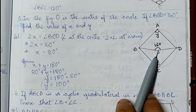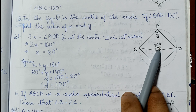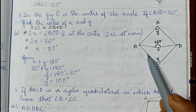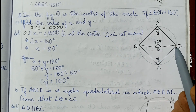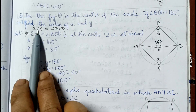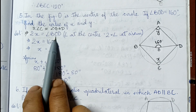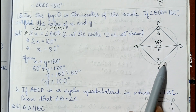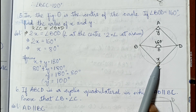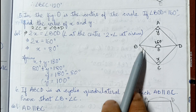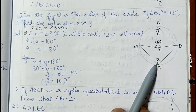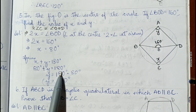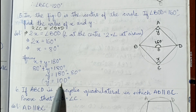Question number five: O is the center of the circle and angle BOD is 160 degrees; find X and Y. The angle at the center is twice the angle at the circumference, so twice angle C equals angle BOD. Twice X equals 160 degrees, so X equals 80 degrees. Then X plus Y equals 180 degrees (opposite angles in a cyclic quadrilateral), so 80 plus Y equals 180, giving Y equals 100 degrees.